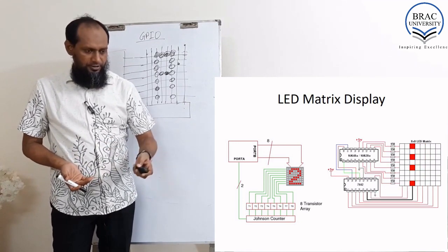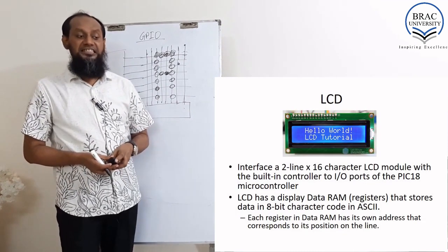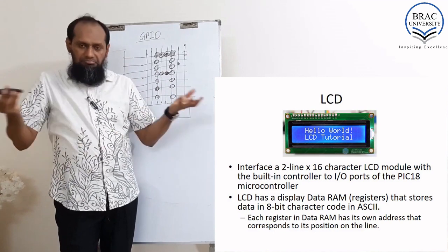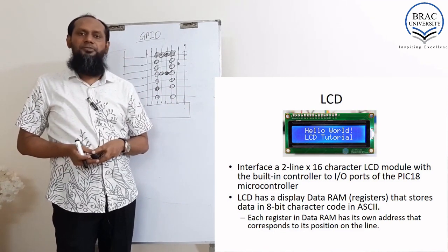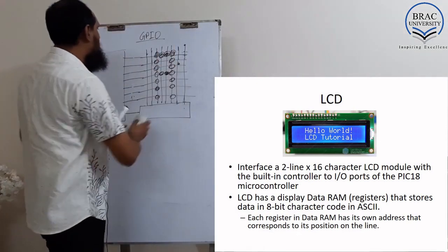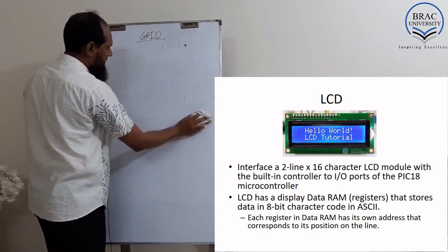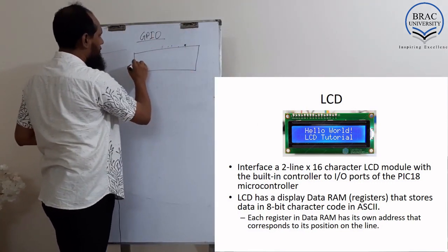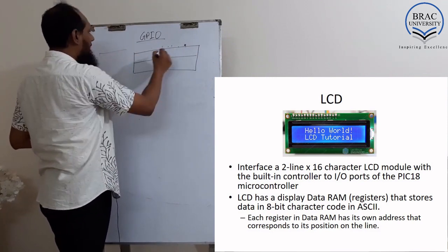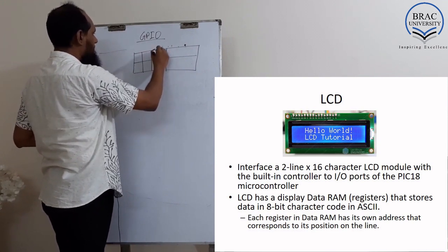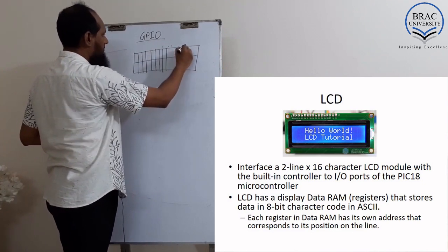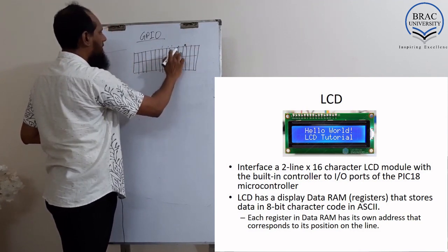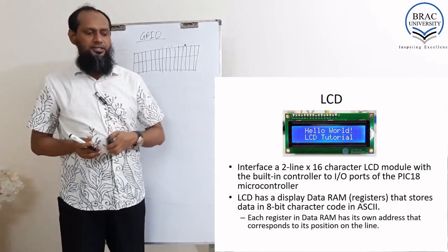Now, one of the most important things: LCD — Liquid Crystal Display. In most of our projects, we use a 2 by 16 LCD. That means 2 lines and 16 columns, or 16 characters in each line — 2 lines and 16 columns.